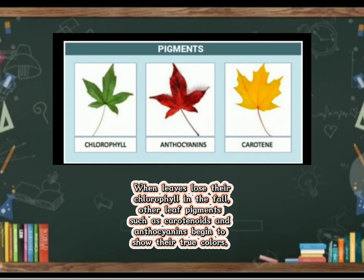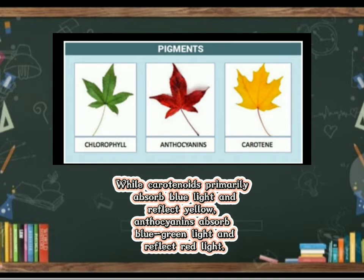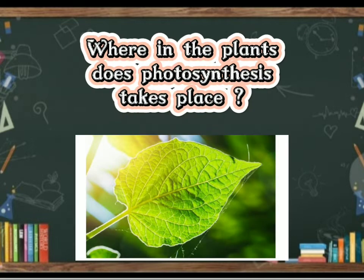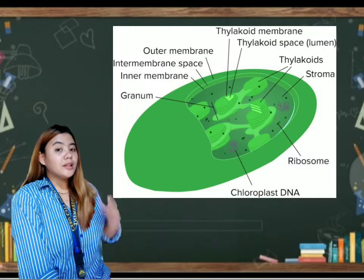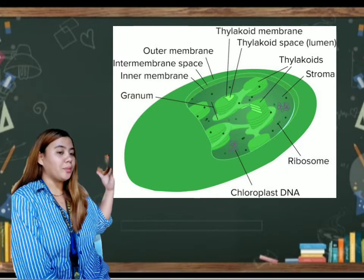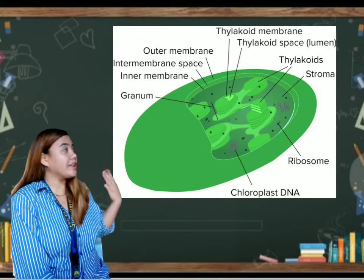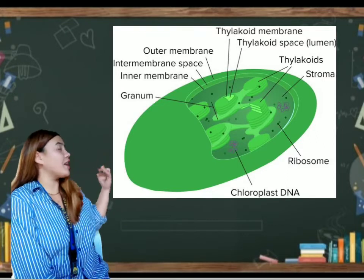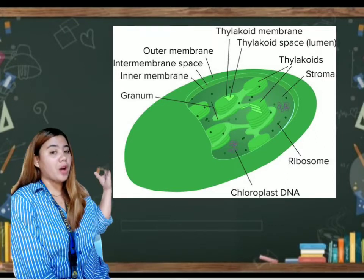And by the way, class, when leaves lose their chlorophyll in the fall, other leaf pigments such as carotenoids and anthocyanins begin to show their true colors. While carotenoids primarily absorb blue light and reflect yellow, anthocyanins absorb blue-green light and reflect red light. Now, where in the plant does photosynthesis take place? Photosynthesis occurs in the chloroplast — as you can see in the picture — a type of plastid and organelle with a membrane that contains chlorophyll and is primarily found in plant leaves.